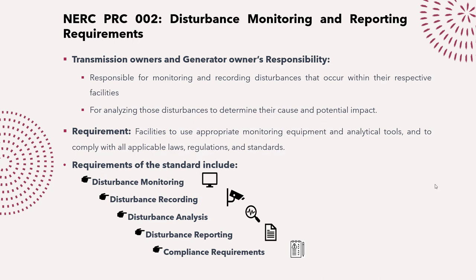Transmission owners and generator owners are responsible for monitoring and recording disturbances that occur within their respective facilities. Whenever there is a fault in a power plant or on a transmission line, the respective owner — where the event is happening — is responsible. Even if the event is not associated with their equipment but has impacted their instruments, they are still responsible for monitoring and recording such disturbances.